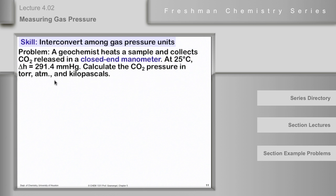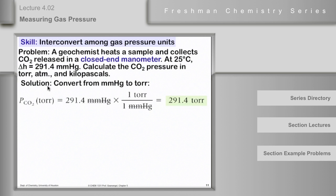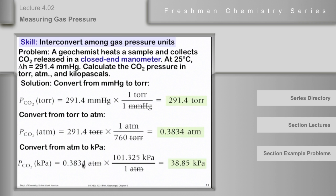This is very simple. All we have to do is take 291.4 millimeters and convert to torr. It's one torr per millimeter, so 291.4 torr is trivial. Then we need to convert this to atmospheres, so we'll take the torr value, multiply it by one atmosphere over 760 torr, the equivalent numbers here. The torrs will cancel and we'll get 0.3834 atmospheres of CO2. Or if we want kilopascals, we'll take the number of atmospheres, 0.3834, multiply by 101 kPa over one atmosphere, and we'll end up with 38.9 kPa.